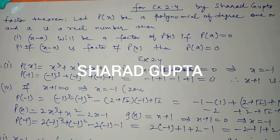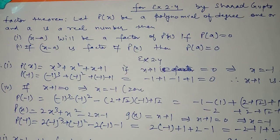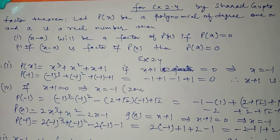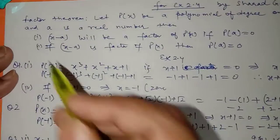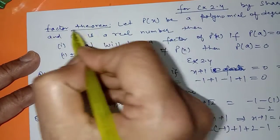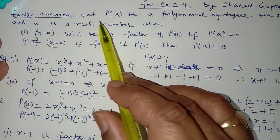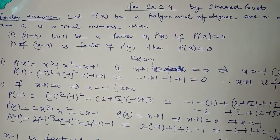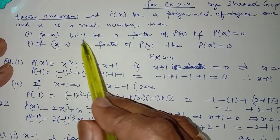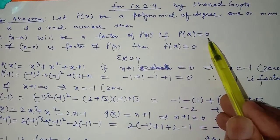Hello, this is lecture number 5 for the chapter Polynomials for class 9th. In the last lecture we discussed the remainder theorem as well as the factor theorem — how to find the remainder when a polynomial is divided by another polynomial. The same concepts appear in exercise 2.4. The factor theorem states: let p(x) be a polynomial of degree 1 or more, and if 'a' is a real number, then (x − a) will be a factor of p(x) if the remainder is 0.